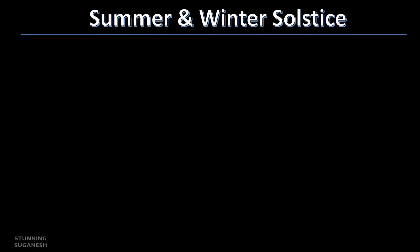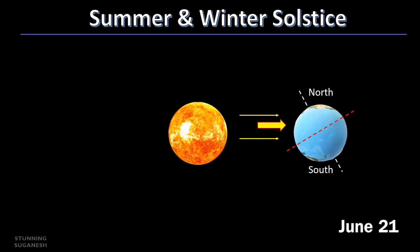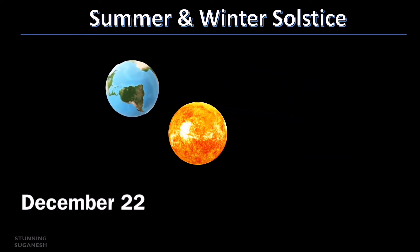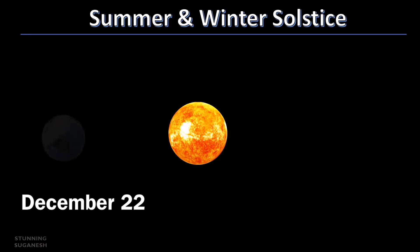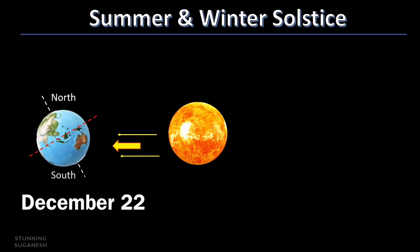During the Summer Solstice, the northern hemisphere is tilted towards the sun for half of the year. During the Winter Solstice, the southern hemisphere is tilted towards the sun, and the northern part is away from the sun.